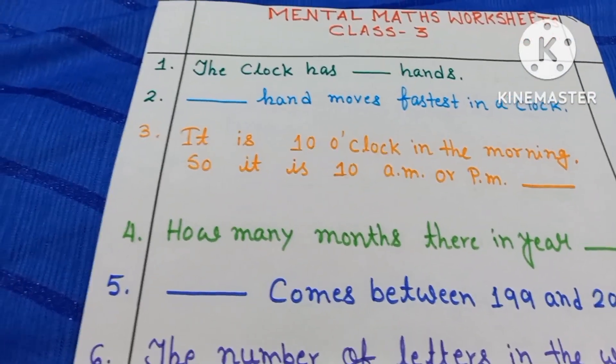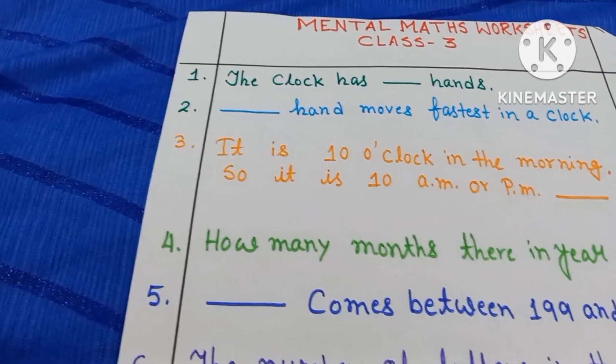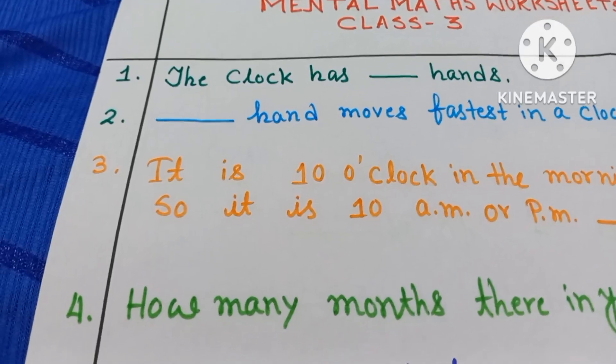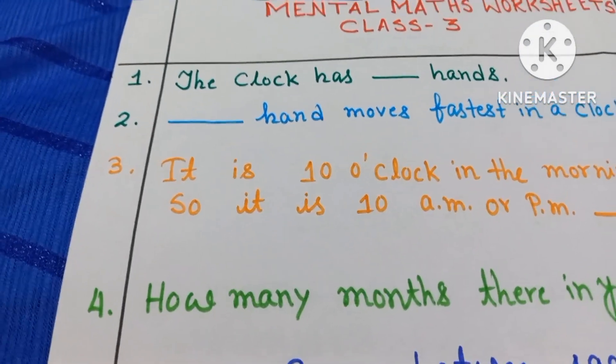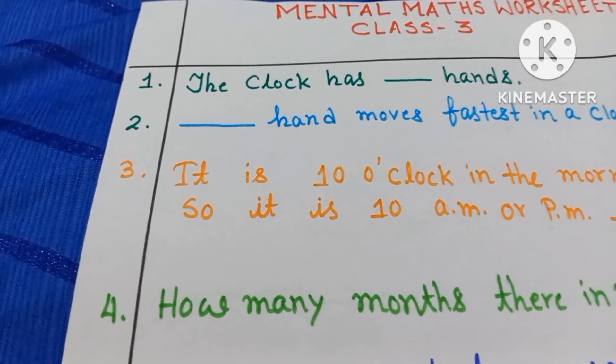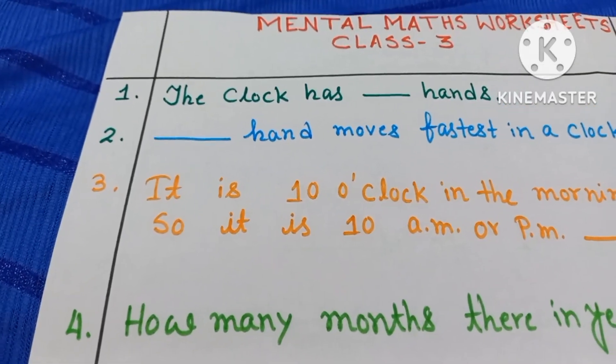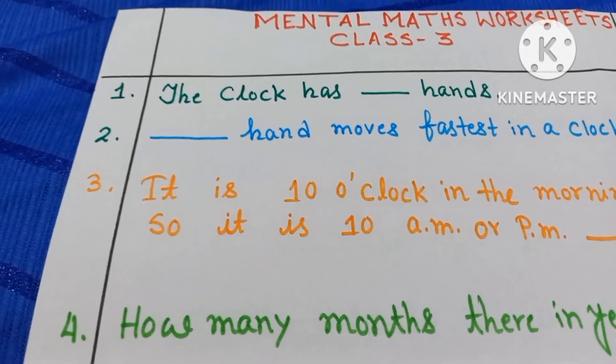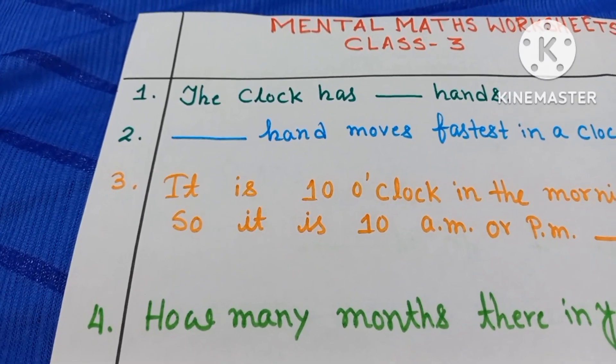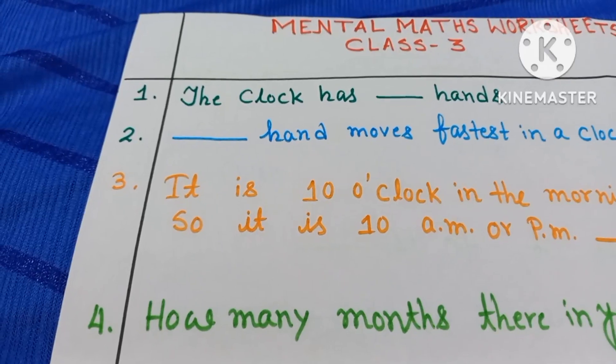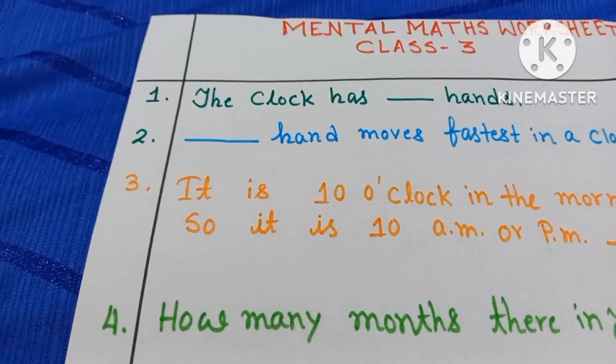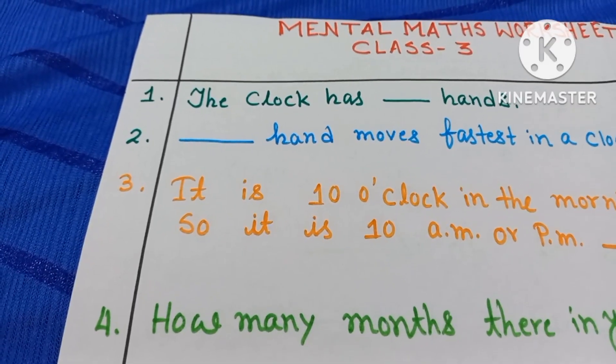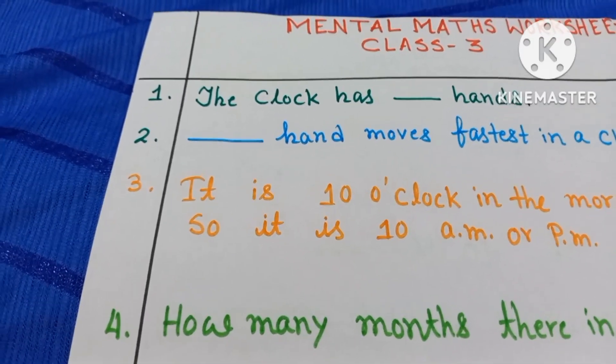I am here with your math worksheet, mental math worksheet for class 3. Now I am going to discuss with you. Number 1. The clock has dash hands. Do you know the clock has how many hands? Yes, the clock has 3 hands. Minute hand, hour hands and second hand. So the clock has three hands.